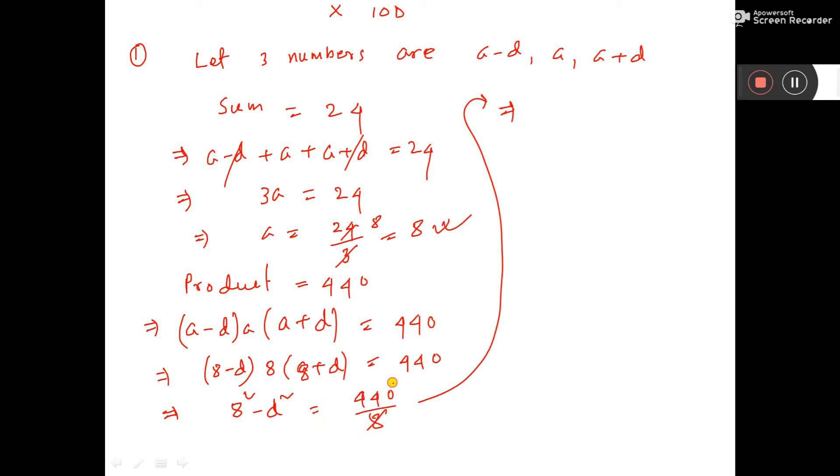So it is coming - you see, 8 squared is 64 minus D squared equals 55. So 64 minus 55 equals D squared. If you subtract, D squared equals 9.